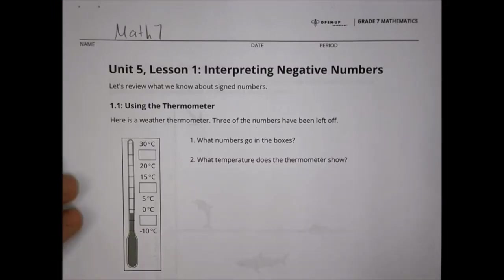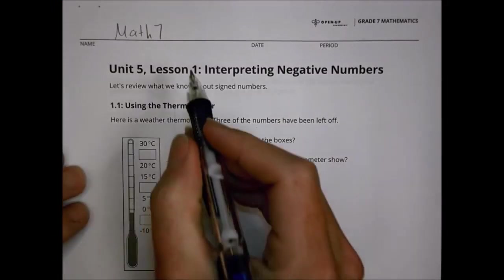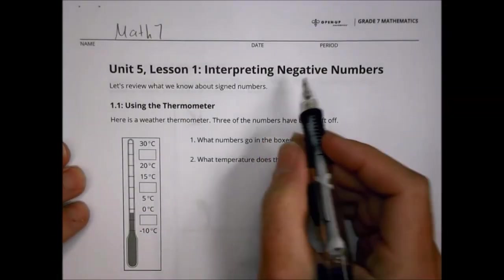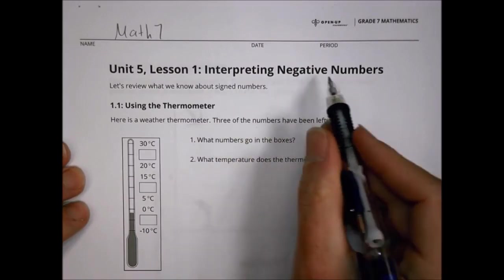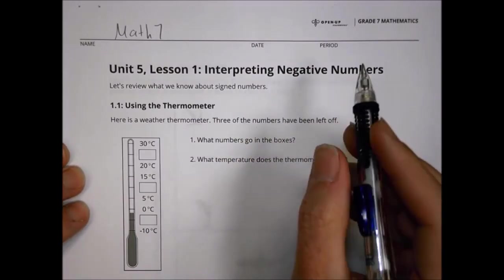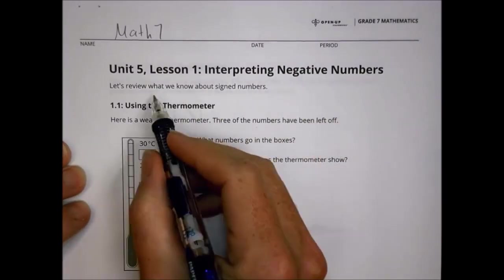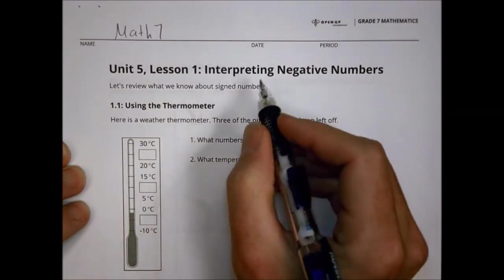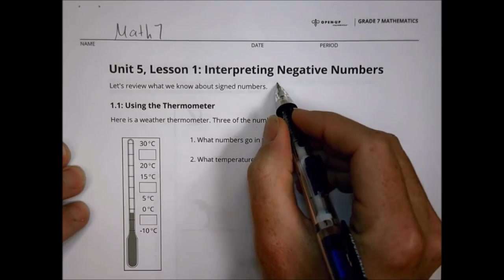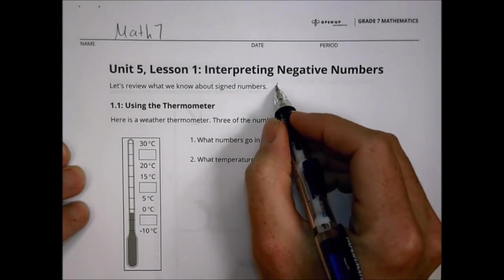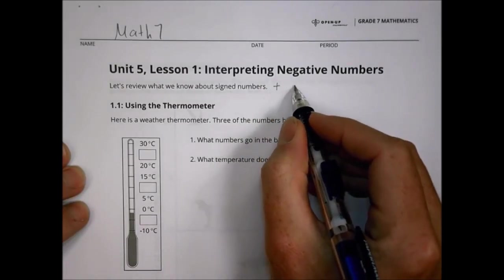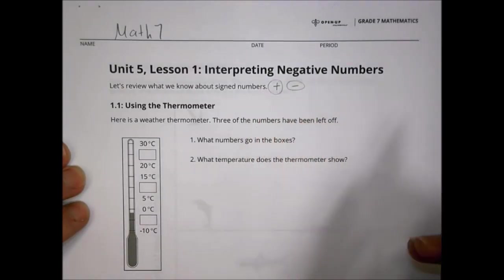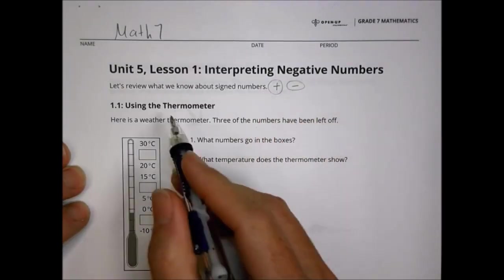Hey there, this is Math 7, Unit 5, Lesson 1. We're looking at interpreting negative numbers today. We're going to review what we know about signed numbers, meaning the difference between positive and negative numbers.